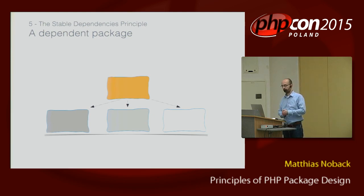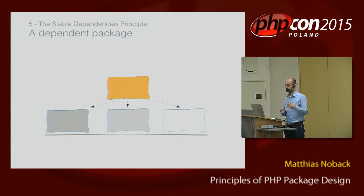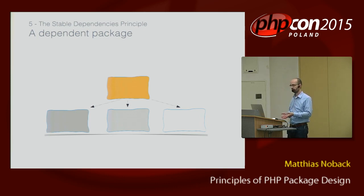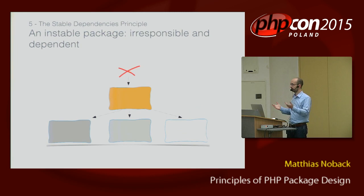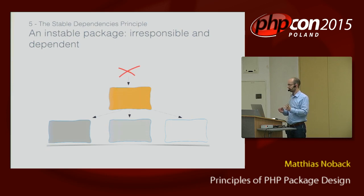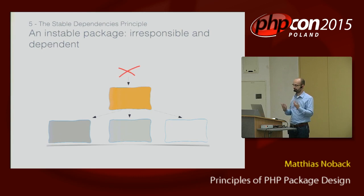And then this is a dependent package. This orange package needs a lot of other packages — like the gray packages — to work correctly. If a package has many dependencies, then any change in any of those dependencies is likely to cause a change in the orange package. So these two combined: this orange package is both irresponsible — it doesn't need to be the same over time because no packages depend on it — and at the same time it's very dependent, needing a lot of packages to work correctly. Irresponsible and dependent together means it's a very unstable package — it's very likely to change.